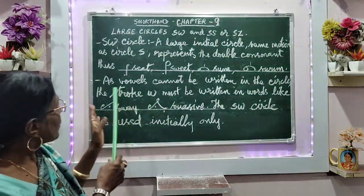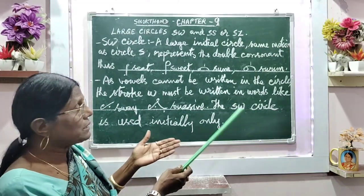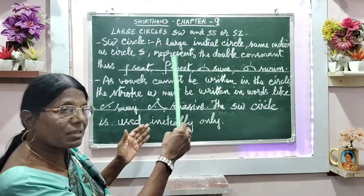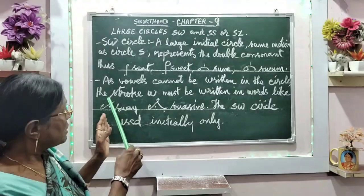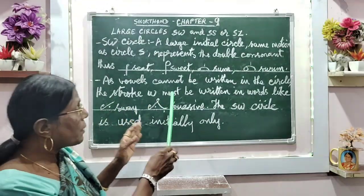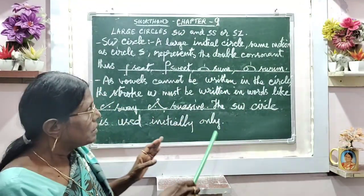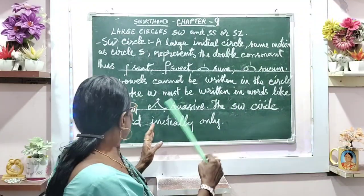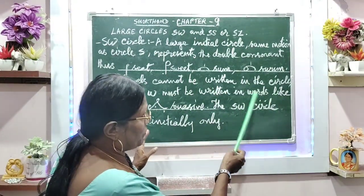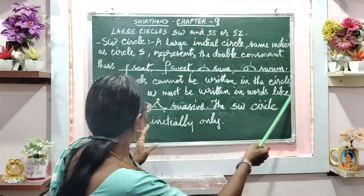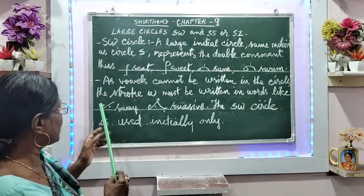As a vowel cannot be written in the circle, we cannot write a vowel in the circle. Therefore, the stroke W must be written in words. It should be written in words — these are the stroke forms we use.